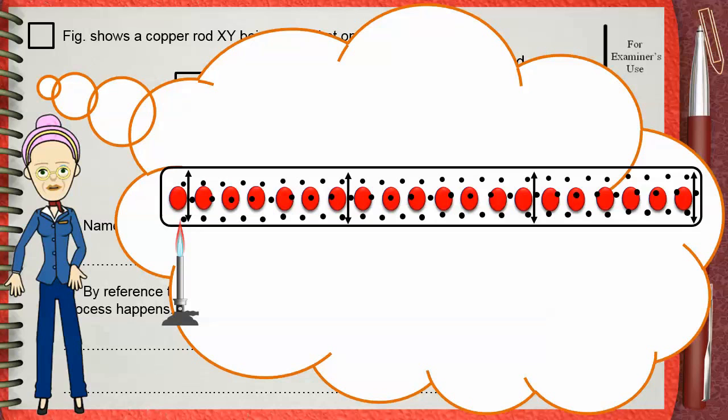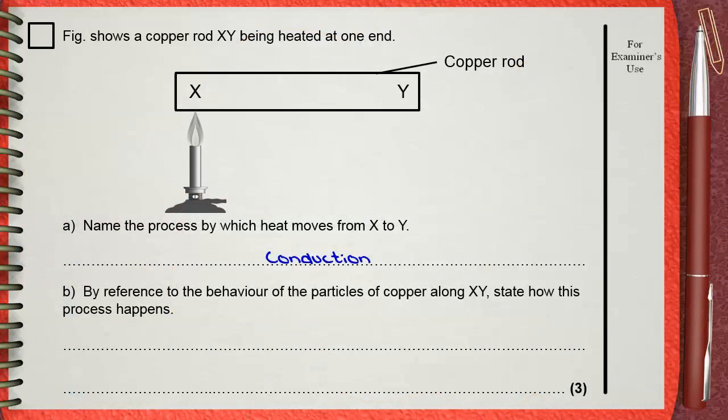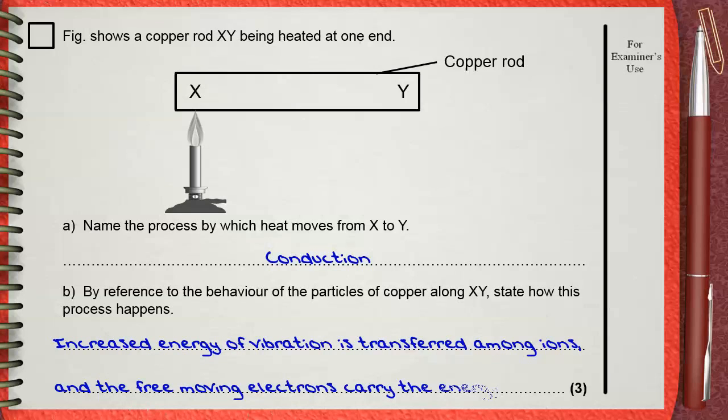So two things happen in the copper rod: increased energy of vibration is transferred among ions and the free-moving electrons carry the energy. This is what happens inside the copper rod and how heat energy is transferred from one end to the other end of the rod.